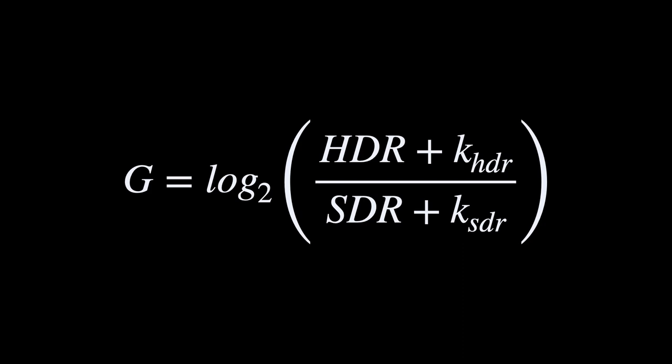We have a couple of small k constants to avoid numerical issues, since divides and logarithms don't work so well near zero. The gain map is expressed in log base 2, so it has an intuitive photographic meaning. If the gain map says zero, that means the HDR and SDR values are identical.